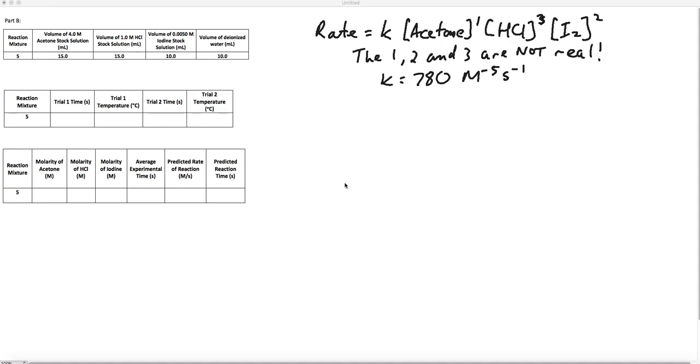I've got this Part B here with a rate equation I came up with based on the data from Part A. I want to point out that 1, 2, and 3 here—these orders—they're not necessarily what you would find. This is just for illustration's sake. We came up with this K value of 780 M to the negative 5 S to the negative 1, and I'm going to now go through how you would determine all the information in Part B.